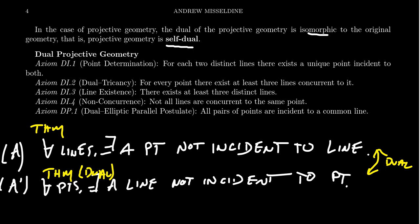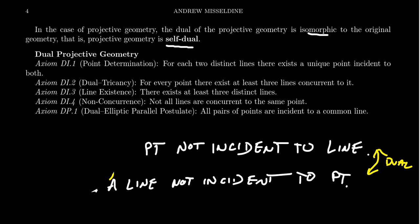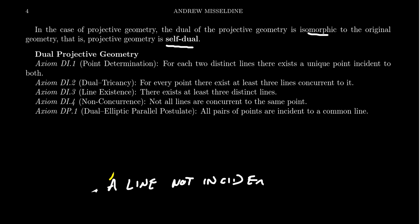One nice thing about duality is that whenever you prove something about a geometry, the dual proof gives us the dual theorem for the dual geometry automatically. The reason this is especially relevant for projective geometry is that projective geometry is self-dual — isomorphic to its dual — so whenever we make a statement in projective geometry, its dual statement also applies. Any theorem proven there automatically has its dual theorem true as well, by the exact same proof.